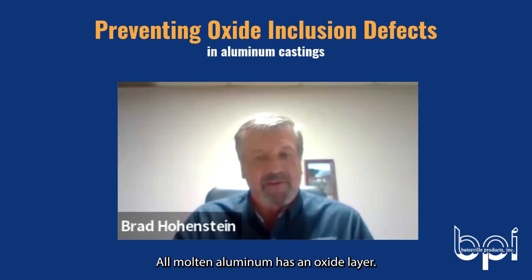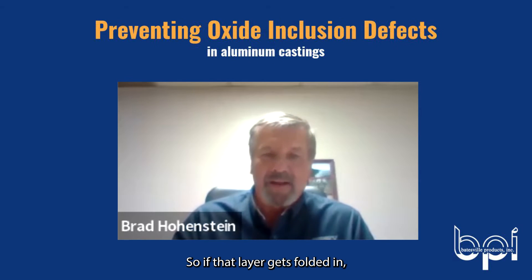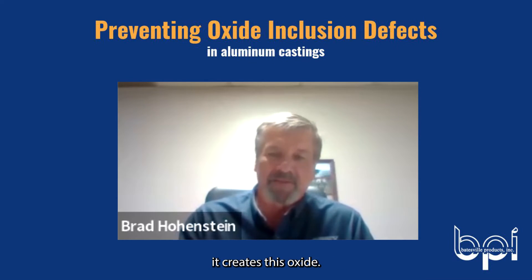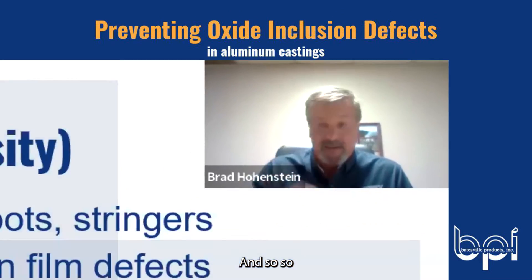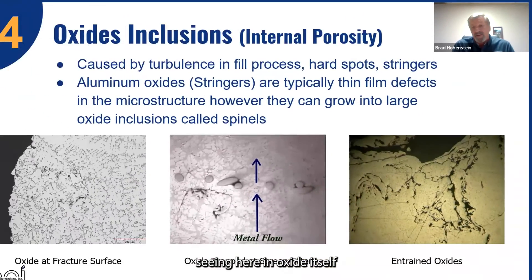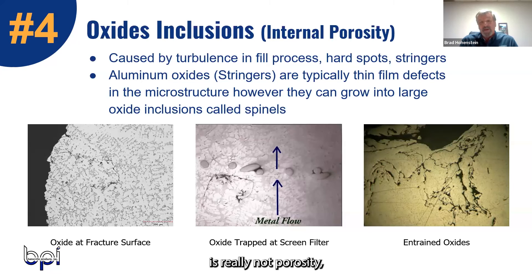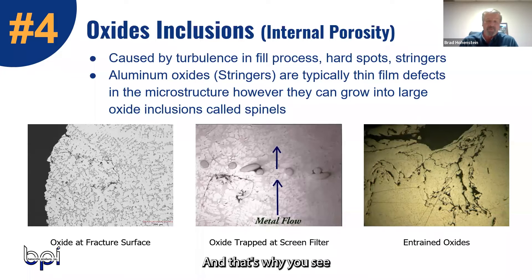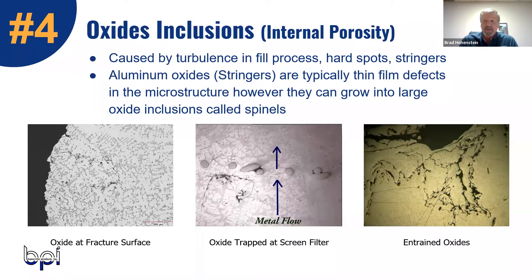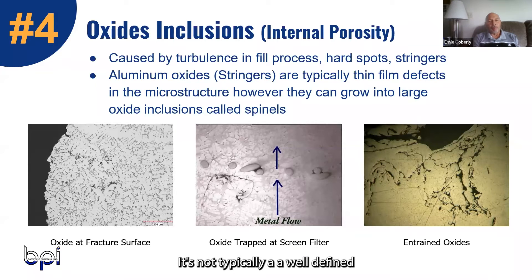All molten aluminum has an oxide layer. So if that layer gets folded in, it creates this oxide. Oxide itself is really not porosity, but it changes the solidification in that area so it doesn't completely fill out. That's why you see the porosity kind of intertwined amongst the oxides — it's not typically a well-defined porosity as much as you see the stringers.